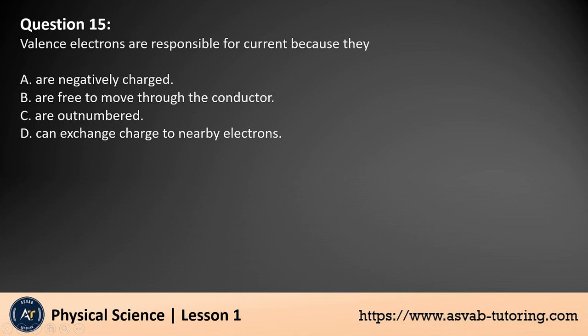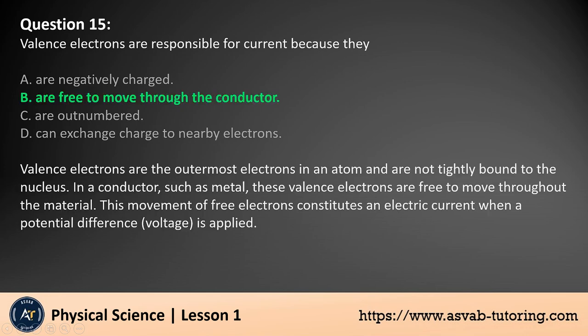Question 15: Valence electrons are responsible for current because they A. Are negatively charged, B. Are free to move through the conductor, C. Are outnumbered, D. Can exchange charge to nearby electrons. The answer is B. Valence electrons are the outermost electrons in an atom and are not tightly bound to the nucleus. In a conductor, such as metal, these valence electrons are free to move throughout the material. This movement of free electrons constitutes an electric current when a potential difference or voltage is applied.